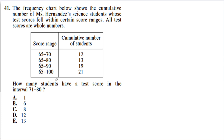Problem 41 is about a frequency chart showing the cumulative number of Ms. Hernandez's science students whose test scores fell within certain score ranges. All test scores are whole numbers. The question asks: based on this chart, how many students have a test score in the 71 to 80 range? The 71 to 80 range encompasses this one right here, and we don't want to go above 80. The 65 to 70 range encompasses 12 people.